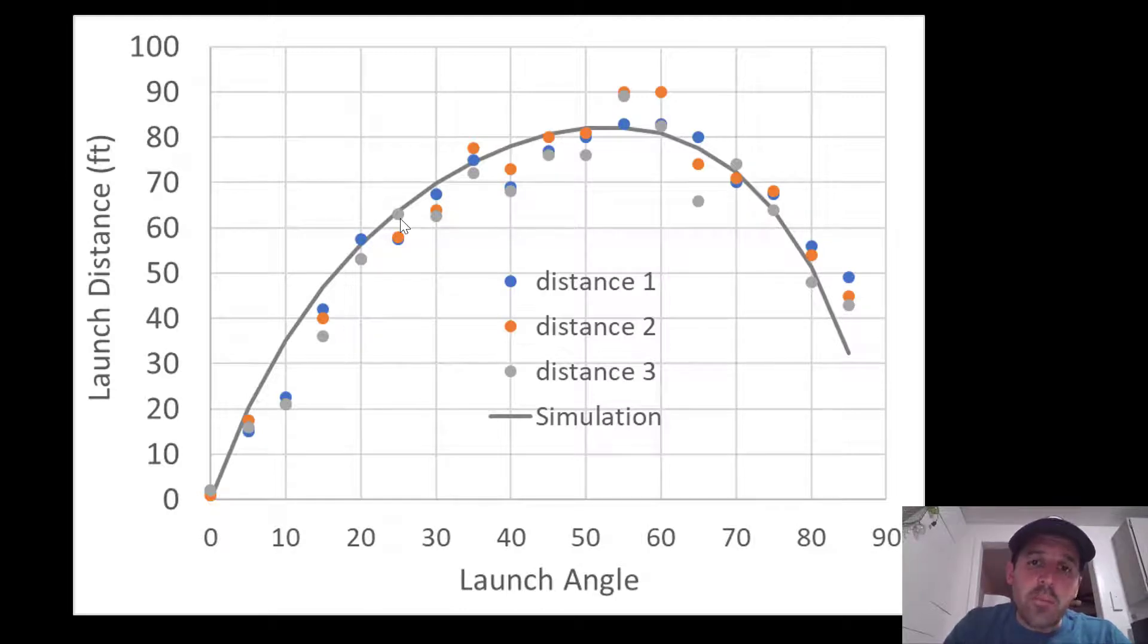We were able to compare our simulated example, which is represented by this line. Here we're looking at a graph of the launch angle versus the launch distance. So we compared our simulated distance, which is the line, to our experimental distances.